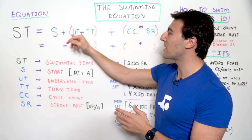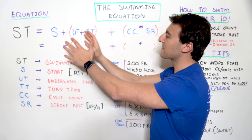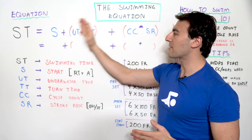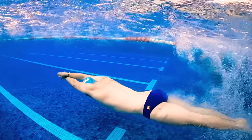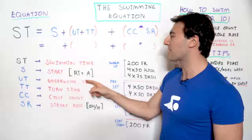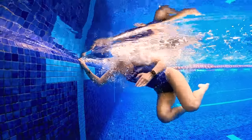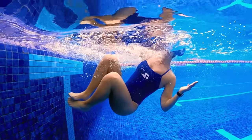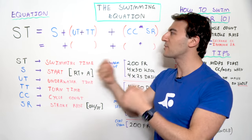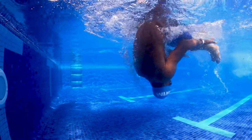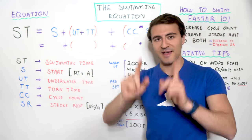So let's see what the swimming equation is made up of. We have ST representing our swimming time. On one side of the equation we have our underwater time — this is basically what's happening when you're not even swimming. So when you push off the wall, that's what UT represents, that's the underwater time. Then we have the turn time. You're not actually swimming in that phase, you're not making any forward progress. So if you're thinking about a 50 in a short course pool or a 100 in a long course pool, while you're doing the turn — regardless of the kind of turn you're doing — that's what TT represents, our turn time. We'll come back to this at the end of the equation.